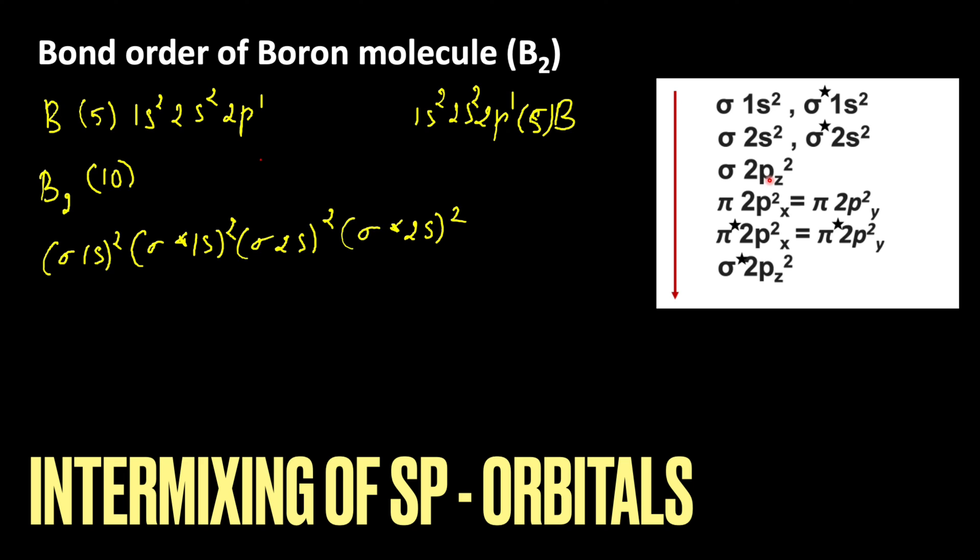So, in case of boron, carbon and nitrogen, after filling the sigma star 2s orbital, electrons enter into pi 2px and pi 2py orbitals.